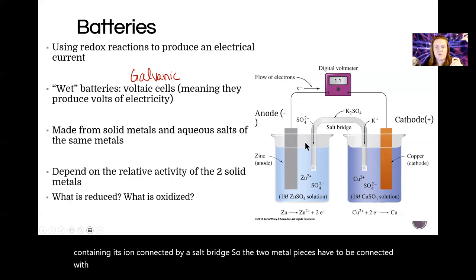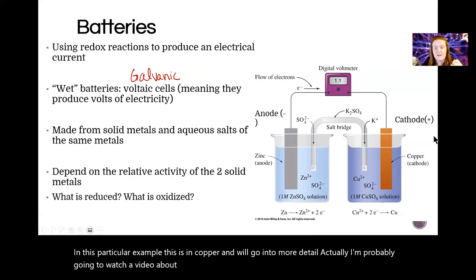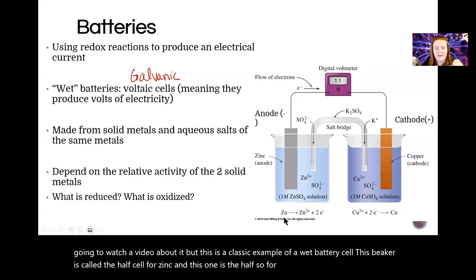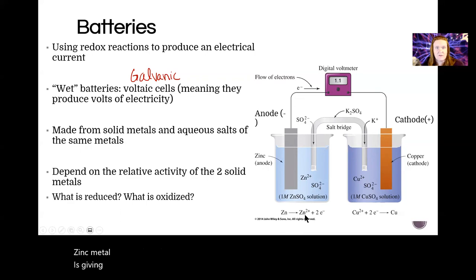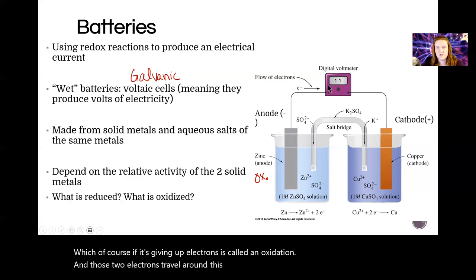So the two metal pieces have to be connected with wire and you need the salt bridge to complete the circuit. In this particular example, zinc and copper. I'm probably gonna have you watch a video about it, but this is a classic example of a wet battery cell. This beaker is called the half cell for zinc and this one's the half cell for copper. Basically zinc metal is giving up two electrons, which of course if it's giving up electrons is called an oxidation.